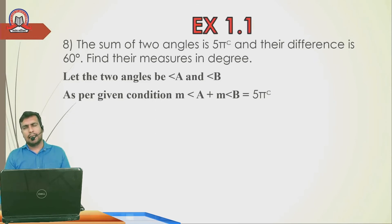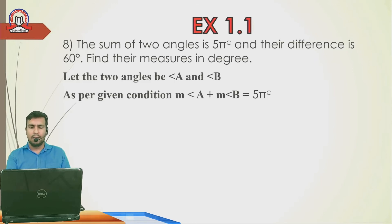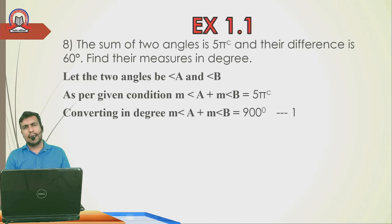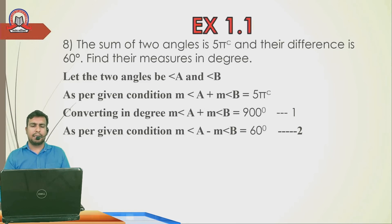Next, Exercise 1.1 Question 9: 'The sum of two angles is 5π radian and their difference is 60°.' Converting 5π radian to degree: 5π × 180/π — π cancels — = 900°. So Equation 1: Angle A + Angle B = 900°. As per the given condition, Equation 2: Angle A − Angle B = 60°.